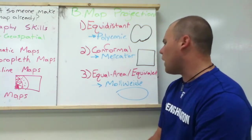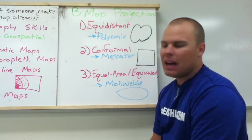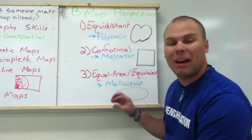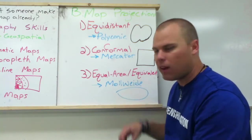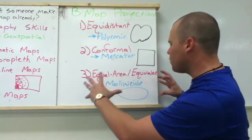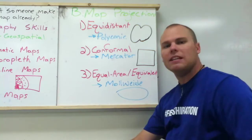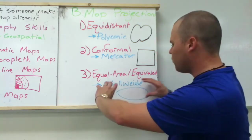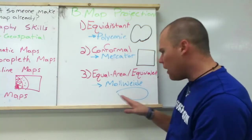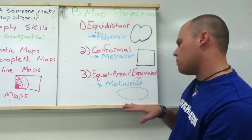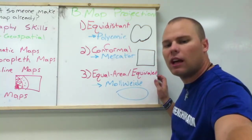Then you've got equal area and equivalent types of maps, which are the best representation of the map overall. It takes the sphere and flattens it out. The best example of that is the Mollweide projection — it flattens it out a little bit, makes it more oval, and gives you a good representation. Kind of like the blank maps we've used in class already.